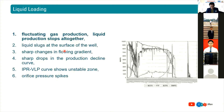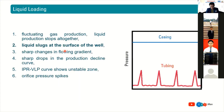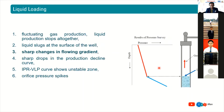If we have liquid slugging at the surface of the well, and if you look at the wellhead pressure, the casing pressure is relatively constant, but the tubing pressure is spiky. This is also a symptom or a sign of the liquid loading phenomenon.